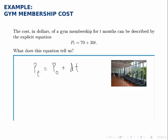Matching this up to the one we're given, we notice that the initial amount is 70 and the growth rate is 30.